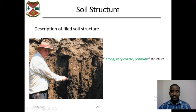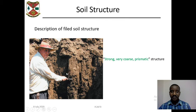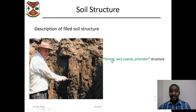Here is another example. This structure is strong, very coarse, prismatic structure. The type is prismatic because it has long prisms or columns. It is very coarse in size, as you can see this is a very large prism. And it is strong — it is difficult to break this prism.